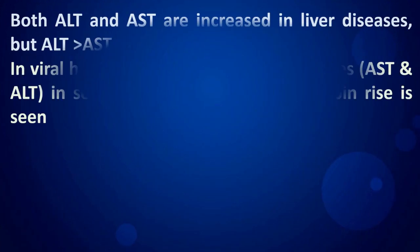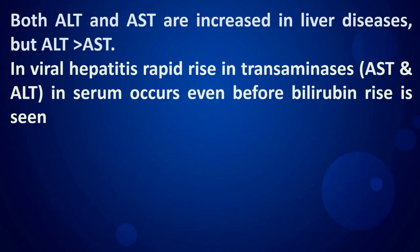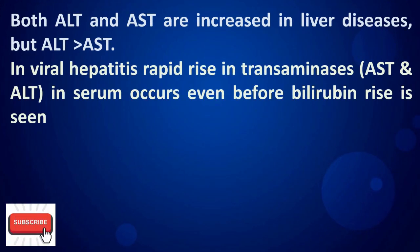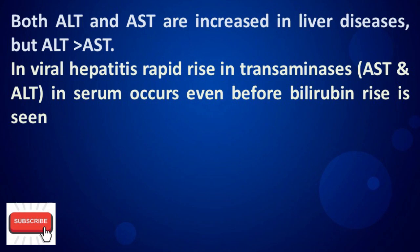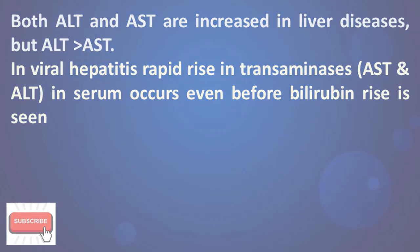Both ALT and AST are increased in liver diseases, but mainly ALT is increased in viral hepatitis. A rapid rise in transaminases in serum occurs even before bilirubin rises.